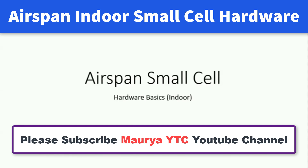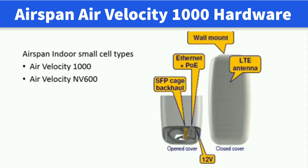Welcome to the course of Airspan Small Cell. In this module, we would be able to understand the basic hardware of Airspan Indoor Small Cell. There are two types of Airspan Indoor Small Cells used in GeoNetwork which are AirVelocity 1000 and AirVelocity NV600.